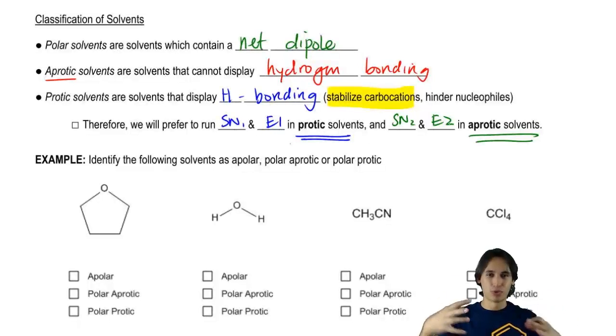So do I want a protic solvent to bulk that – to make it bulky and to slow it down? No. I actually want an aprotic solvent so it's not going to hinder it at all. It's just going to zip right through the solvent.